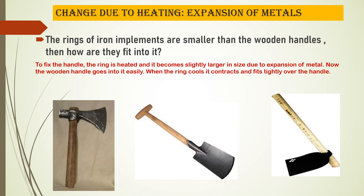When it is in this hot condition, the wooden handle is snugly fit into the ring of the iron implement, and when it cools down, the metal contracts and fits tightly over the wooden handle. This is how this process is done. Here you can see a change which is resulting due to heating and expansion of metals, leading to expansion and contraction of metal to fit tightly over the wooden handle.